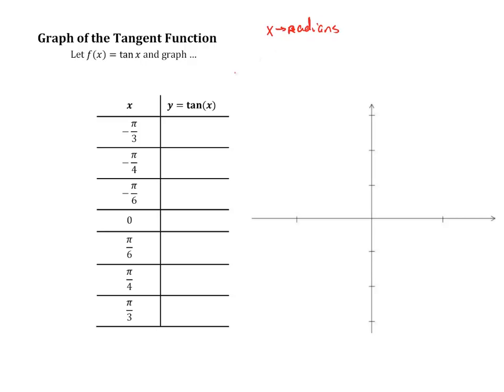So whenever we plug in negative π over 3, we're thinking in terms of a function tangent of the angle negative π over 3, which is down here. And on the unit circle, that point where it intersects is the point that goes over an x direction.